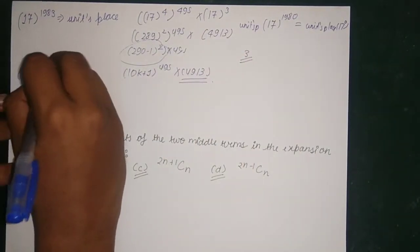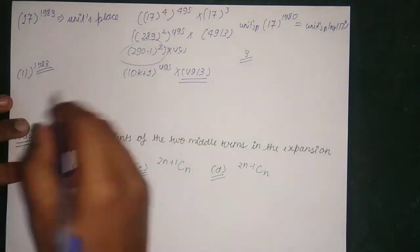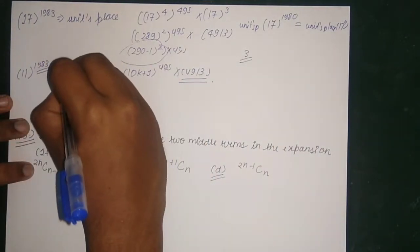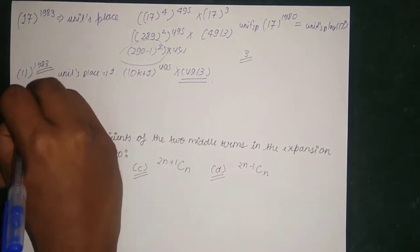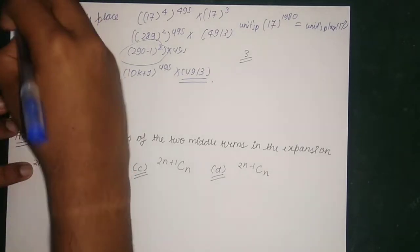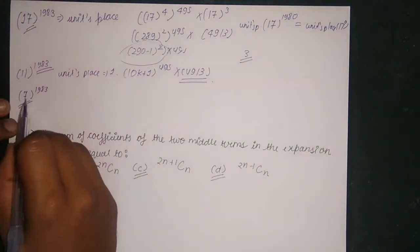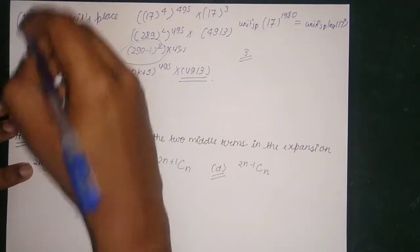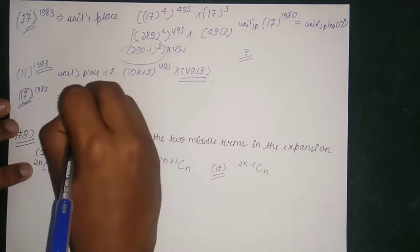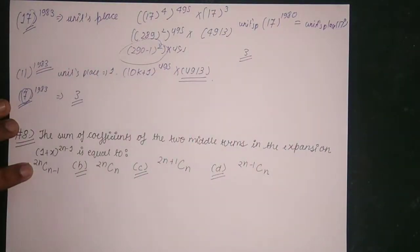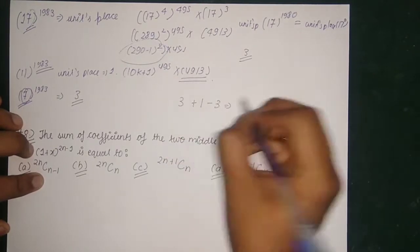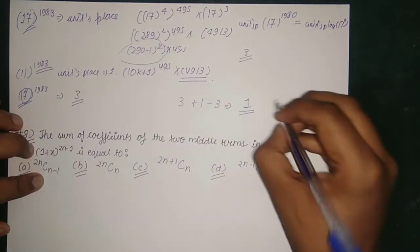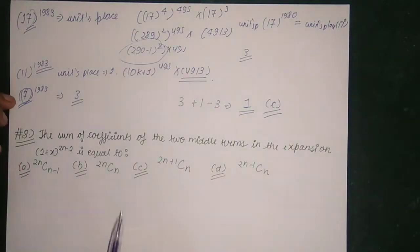Similarly, the units place of 11 to the power anything never changes and is always equal to 1, so its units place is 1. Now for 7 to the power 1983: the units place of 17 to the power 1983 and 7 to the power 1983 will be the same since their units digit is the same, so its units place is also 3. Therefore the units digit of 17 to the power 1983 plus 11 to the power 1983 minus 7 to the power 1983 equals 3 plus 1 minus 3, which is equal to 1. The correct option is option C.